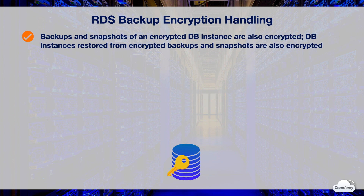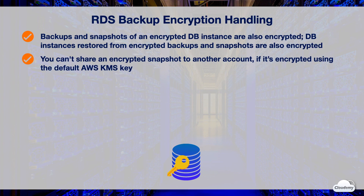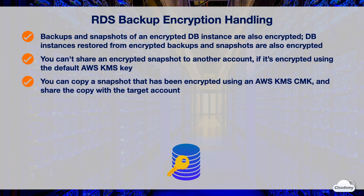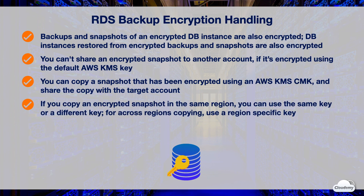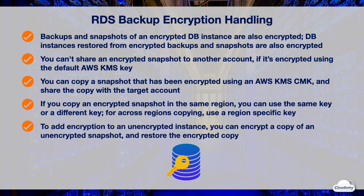Backups and snapshots of an encrypted DB instance are also encrypted. DB instances restored from encrypted backups and snapshots are also encrypted. You cannot share an encrypted snapshot to another account if it's encrypted using the default KMS key. You can copy a snapshot encrypted using an AWS KMS Customer Master Key (CMK) and then share the copy with the target account. If you copy an encrypted snapshot, the copy is also encrypted. If you copy an encrypted snapshot within the same AWS region, you can use the same KMS key or specify a different one. If you copy an encrypted snapshot across regions, you must use a different KMS key specific to the destination region. You can also encrypt a copy of an unencrypted snapshot, allowing you to quickly add encryption to a previously unencrypted DB instance by restoring from the encrypted copy.